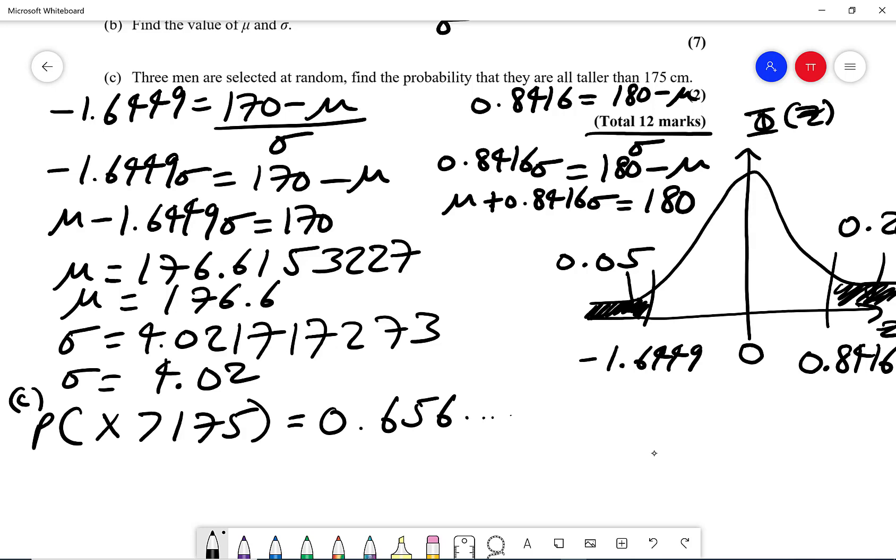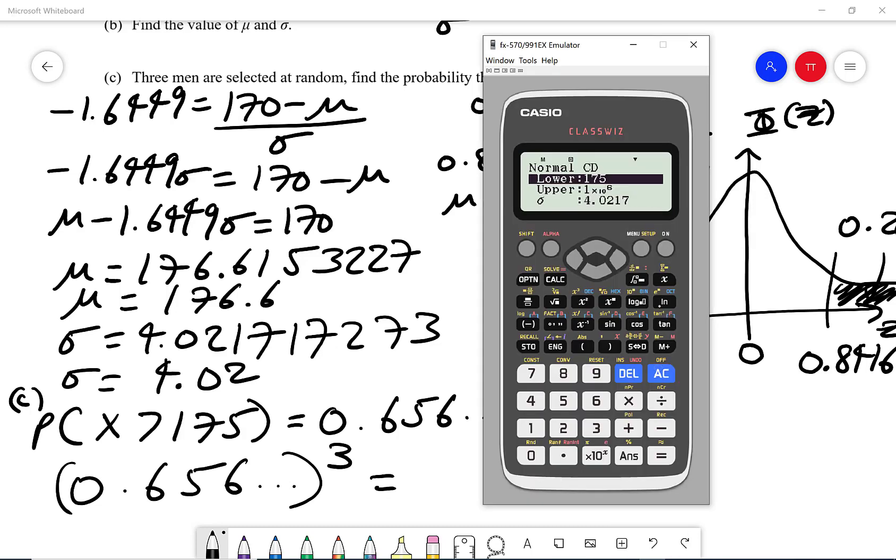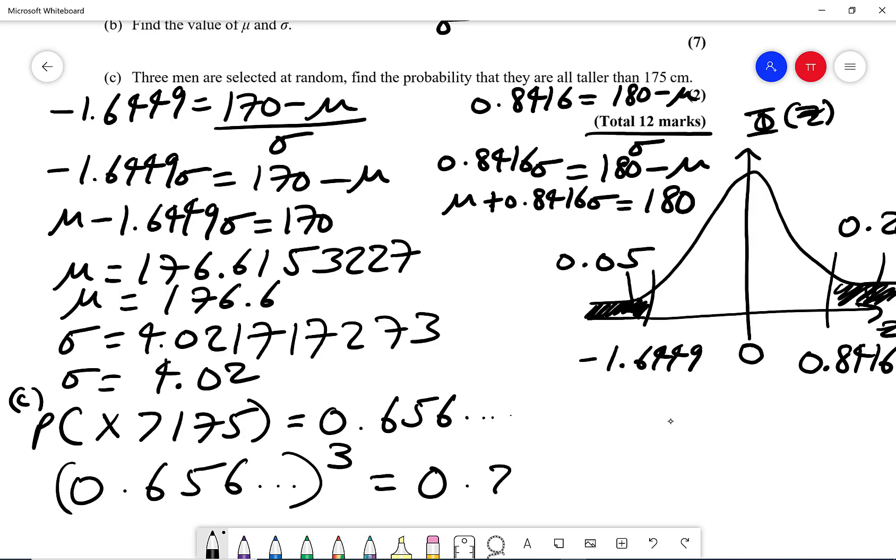Now because there's three men, it's one person is greater than 175 and the second person and the third person, so we do 0.656 raised to the power of 3. I can just go back to my calculator, get my last value raised to the power of 3, and we get 0.2823 and we are done.